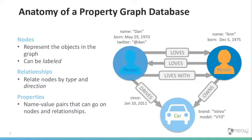It doesn't necessarily imply a schema in the same way that in a relational database every row in a table has the same number of columns. Then we have properties — key-value pairs applied to nodes as well as relationships. The person on the left has the name property of Dan, born May 29, 1970, with a Twitter handle. The person on the right has the name property of Ann, born December 5, 1975, with no Twitter property — and that's okay. Both being person nodes doesn't mean they have to have the same properties. It's very flexible — schemaless, or schema-lite.